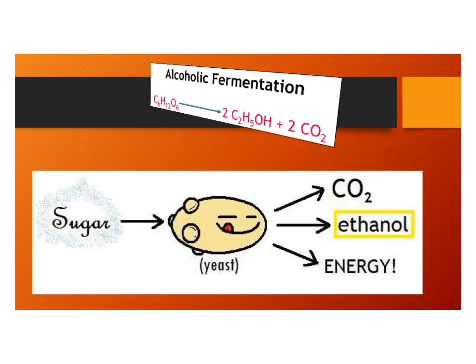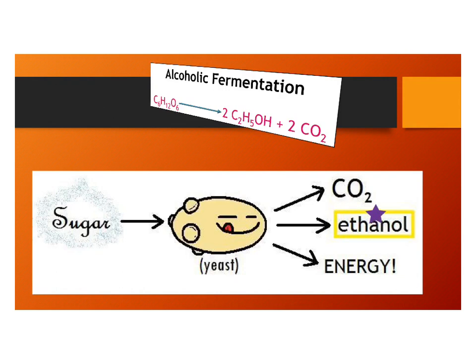This process is called alcoholic fermentation. We have glucose, and we end up with two alcohols and two carbon dioxides. Another way to think about it: sugar is broken down by yeast or bacteria, and you end up with carbon dioxide, ethanol, and energy — and remember that's two ATPs.